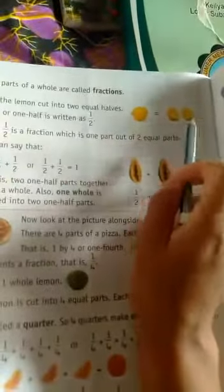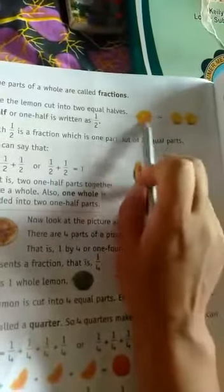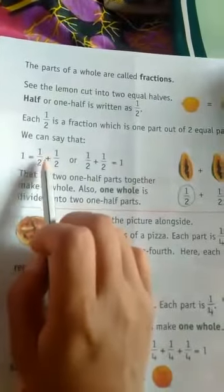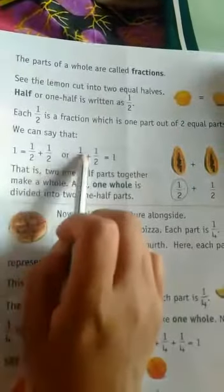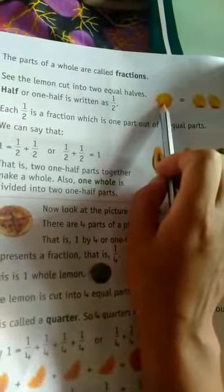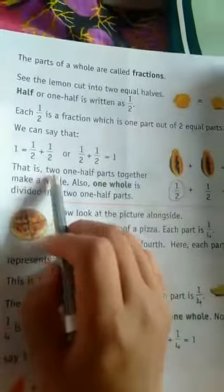Half plus half - these two halves make one full lemon. So one is equal to one by two, which means half plus half, or one-half plus half, you will get one whole lemon, right?